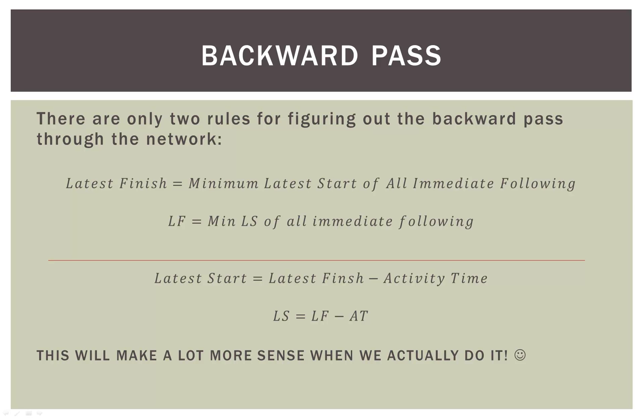In the backward pass, remember we're starting at the end of our project and running it back in time to the beginning. We're finding two pieces of information: the latest finish, which is LF, and the latest start, which is LS. To find the latest finish, we find the minimum LS of all activities that immediately follow the node we're on. The latest start is just the latest finish minus the activity time. The backward pass is the least intuitive of the two because we're actually going backward in time, and it will make a lot more sense when we actually do it in the second video.